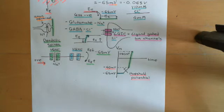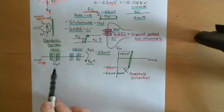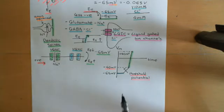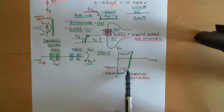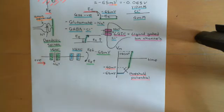So if excitation is big enough — bigger than the inhibition by enough — then we'll get a net amount of positive charge arriving into the cytoplasm of the axon hillock. This will depolarise the electrical potential difference across the cell membrane up to the threshold potential for the activation of voltage-gated sodium channels and voltage-gated potassium channels, which is around negative 40 millivolts.